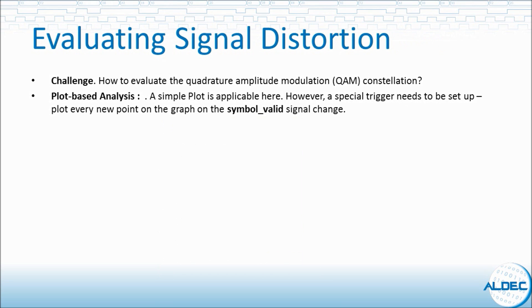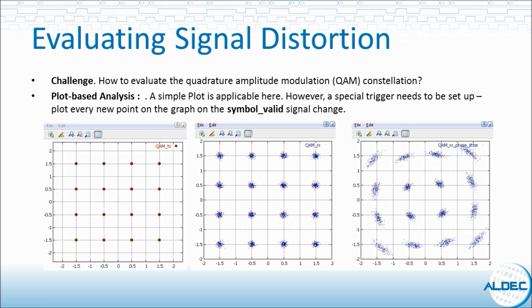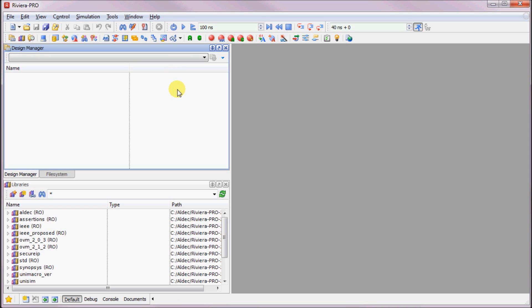The final example is on how to evaluate i and q signals from a demodulator and restore the original data based on these signals, taking the noise and distortion into account. A simple plot is applicable here where every i and q pair represent a cartesian coordinate. However, a special trigger needs to be set up so that every new point on the graph is based on a strobe signal change. Here the first figure is the transmitter QAM constellation. The second is the receiver constellation. The third one is the phase jitter at the receiver. Now that we have seen the plot feature, let's take a look at how easy it is to create such plots in Rivera Pro.